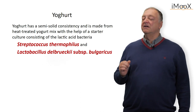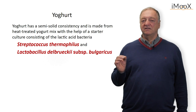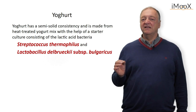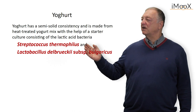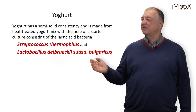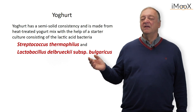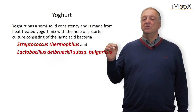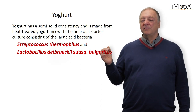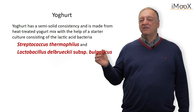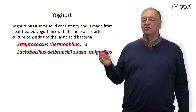For yogurt production we have two specific bacterial species that are used in traditional yogurt: Streptococcus thermophilus and Lactobacillus delbrueckii subspecies Bulgaricus. A combination of these two bacterial strains gives the optimal product with acidity, taste, aroma, and the right remaining sugar concentration.